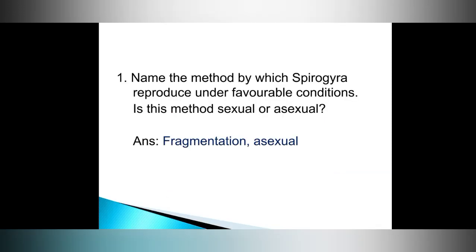Question number one: name the method by which Spirogyra reproduces under favorable conditions. Is this method sexual or asexual? Answer: fragmentation. It's an asexual method.